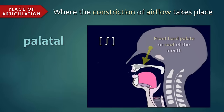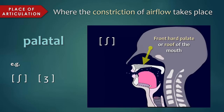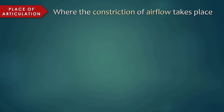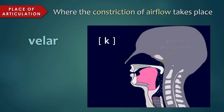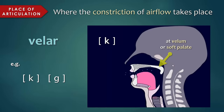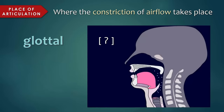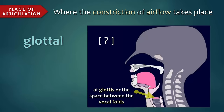Palatal sounds are produced at the hard palate, or the roof of the mouth, such as sh, zh, y. Velar sounds are produced at the velum, or soft palate, such as k, g. And glottal sounds are produced at the glottis, or the space between the vocal folds, such as h, or the catch in the throat, as in batman.